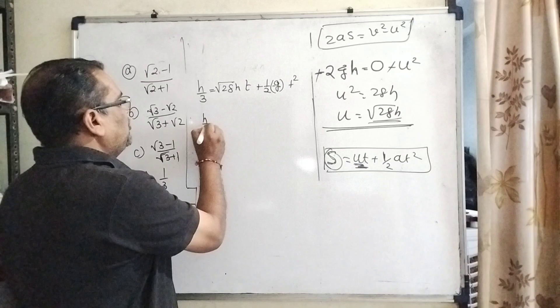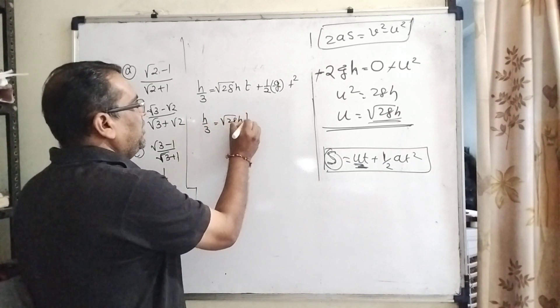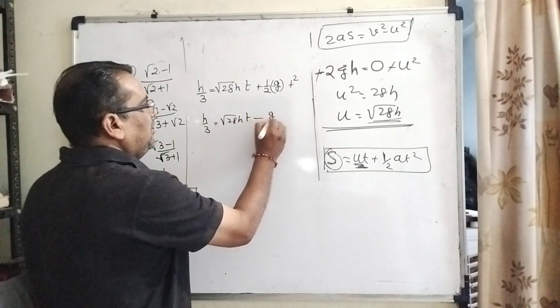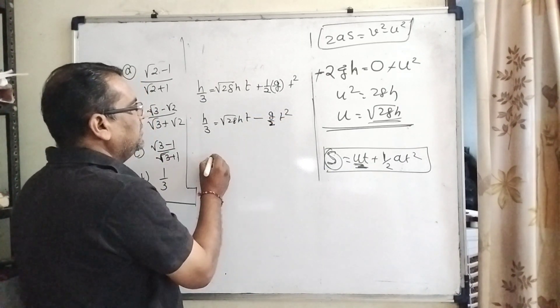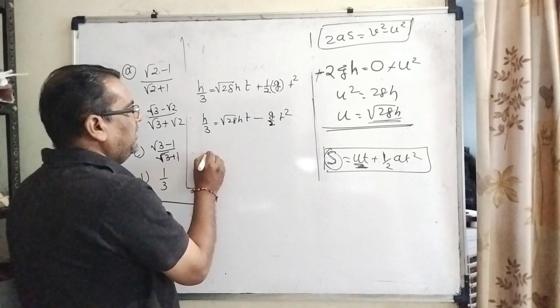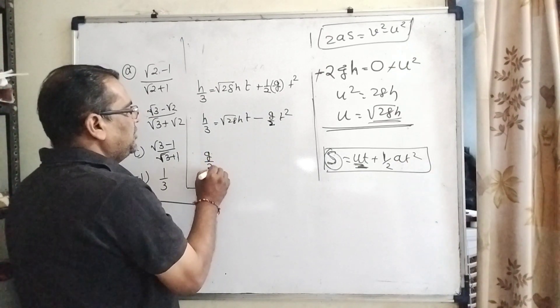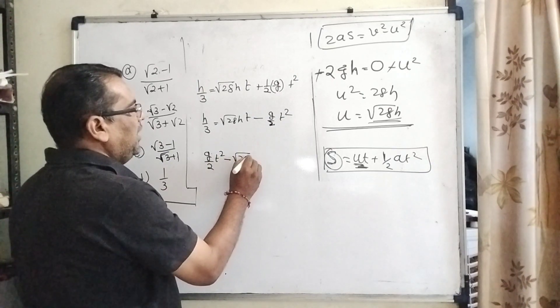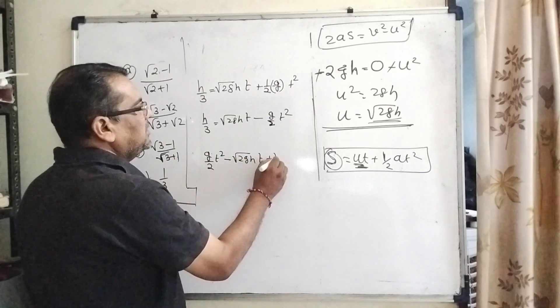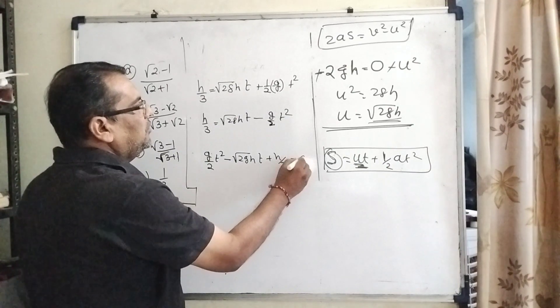Transposing all terms to the left side, we get (g/2)t² - √(2gh)·t + h/3 = 0.